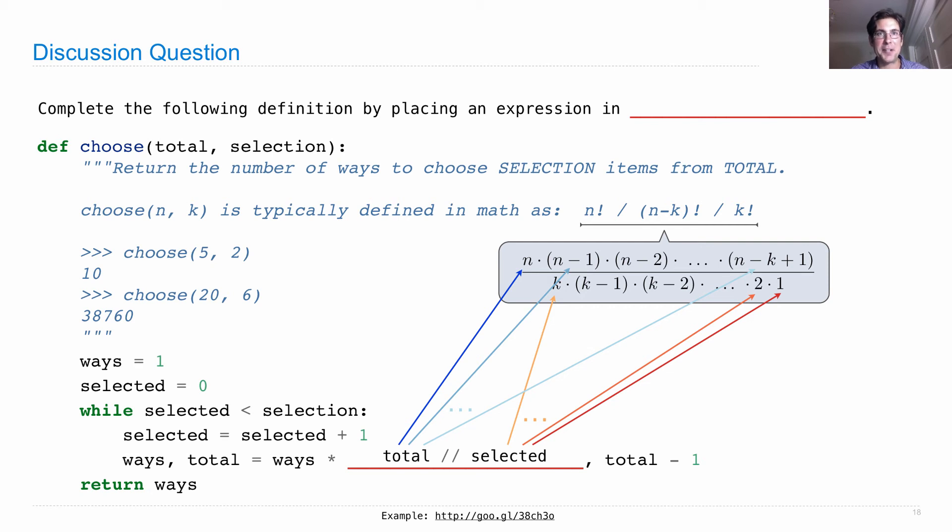in this expression. It turns out that whatever selected is equal to will always divide evenly into ways times total.